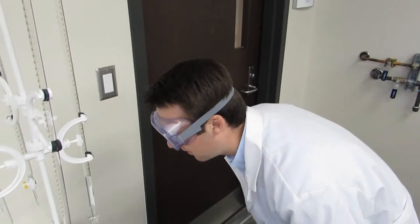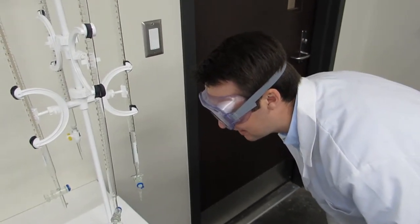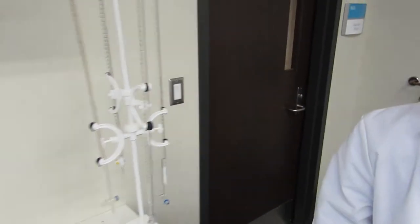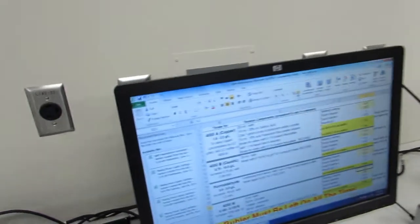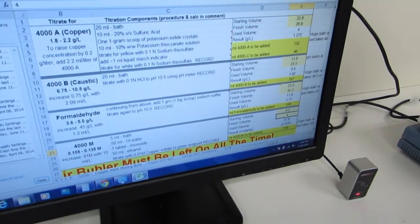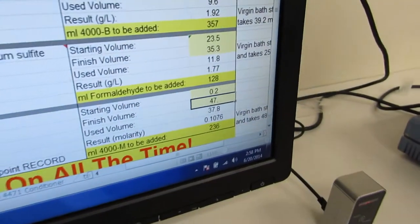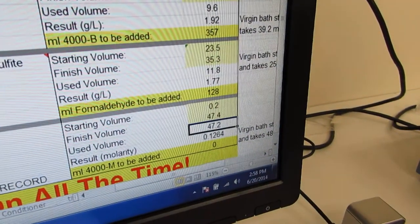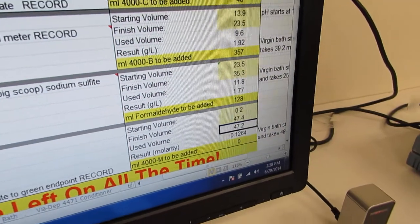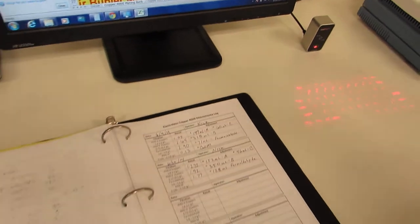Beautiful. Our ending volume is 47.4. So we go down, type in 47.4, and our result is 0.126.